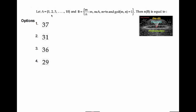Given set A is equal to 1, 2, 3 and so on up to 10, and B is equal to M upon N where M and N belong to the set A, M is smaller than N, and GCD of M, N is 1. We need to find the number of elements in set B.